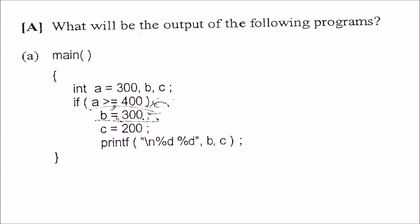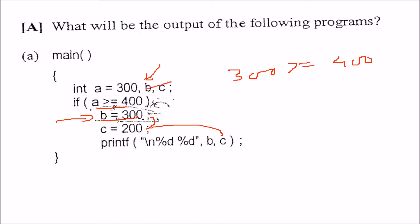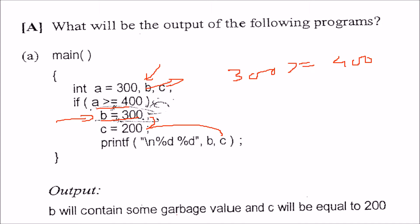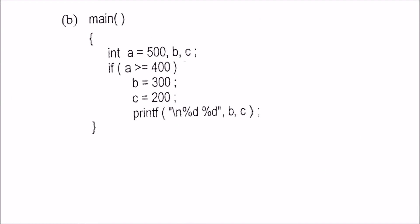The first question asks for the output where a is 300, b, c, and a is greater than or equal to 400. Since 300 is not greater than or equal to 400, this condition is false. So this line will not execute; only the else line will execute, so c will be 200. But b was never initialized, so there will be some garbage value in b.